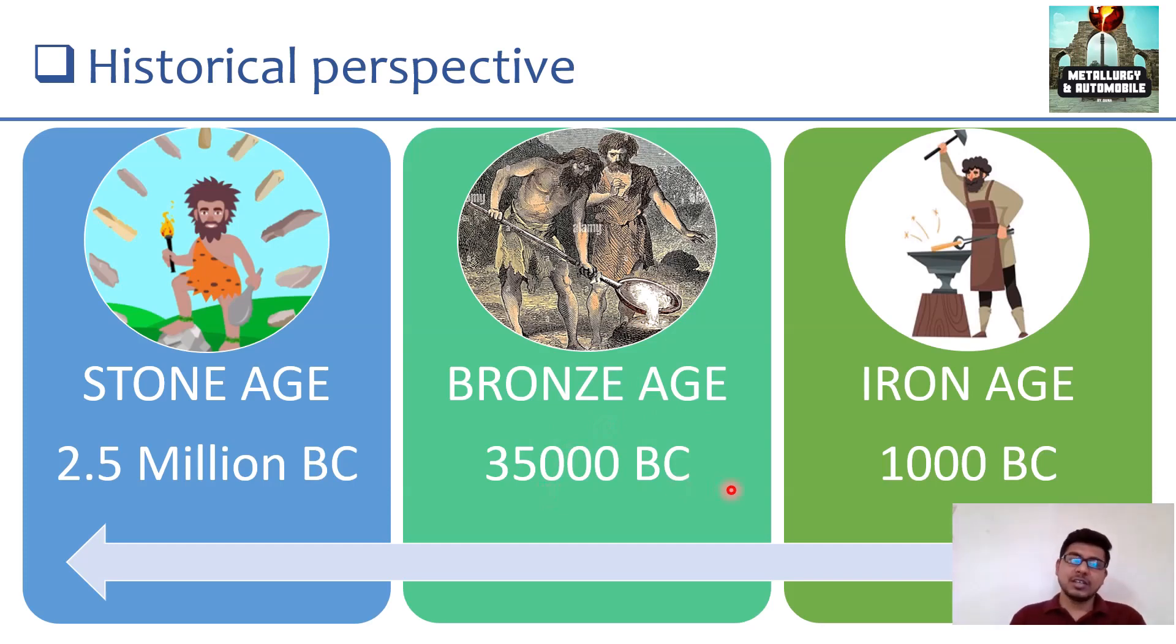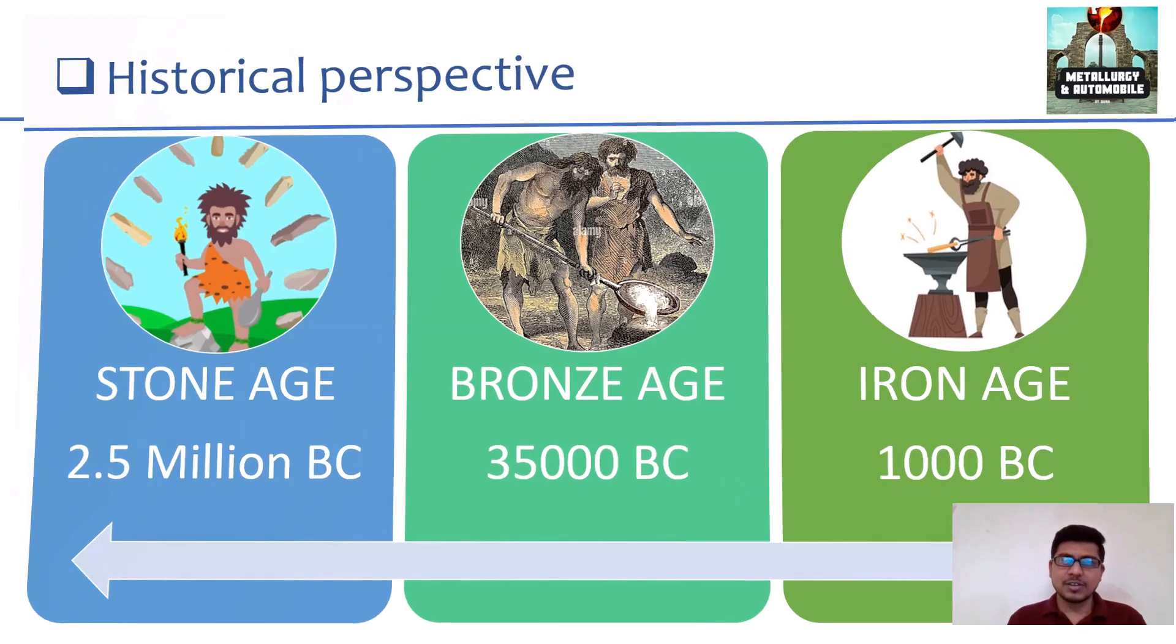After that, everything is a continuous improvement. Man slowly learned how to produce iron from 1000 BC. It changed total human structural technology everywhere you see, every construction, every technology, steel, iron, metals are the basic things for all the technologies. Iron and steel production have changed entire technology in the whole world. This is the historical perspective of the material science.